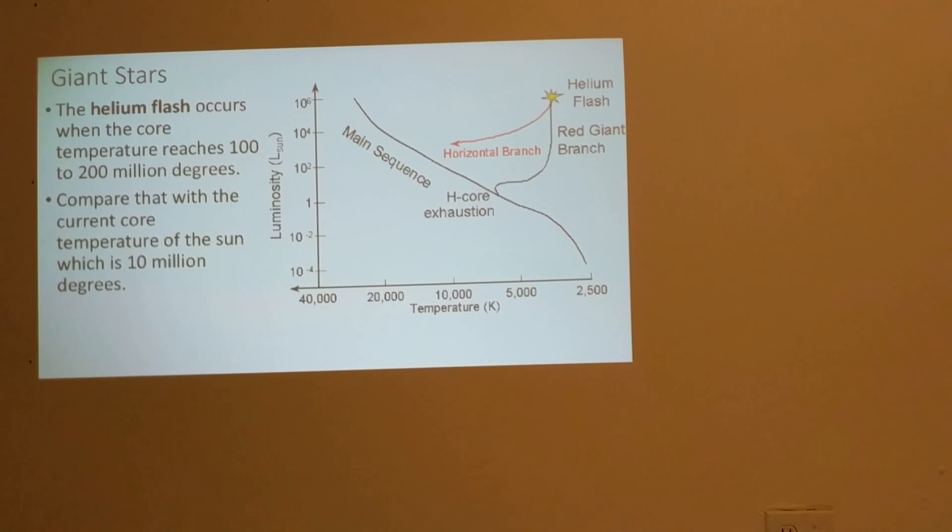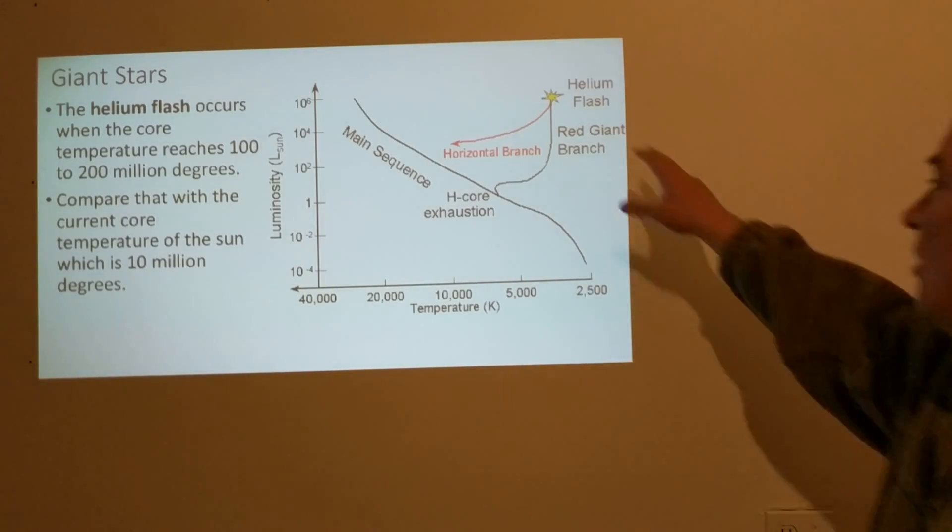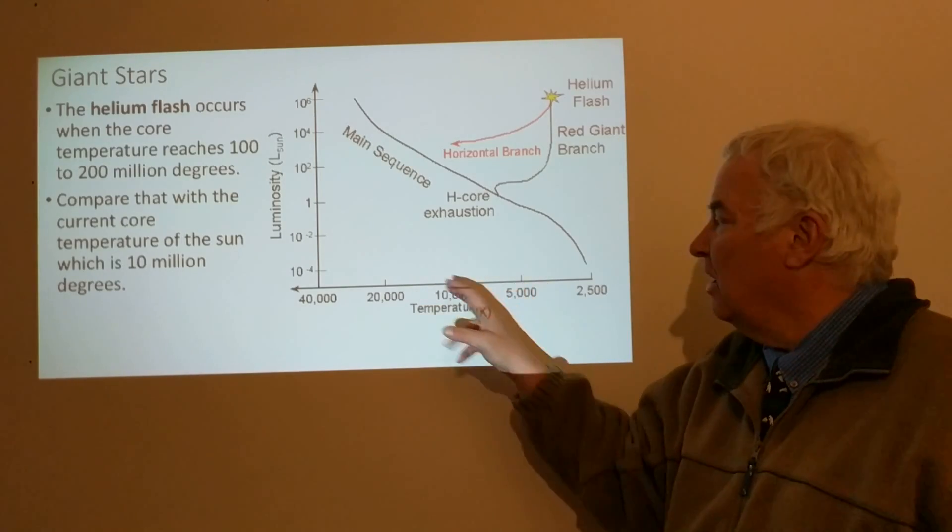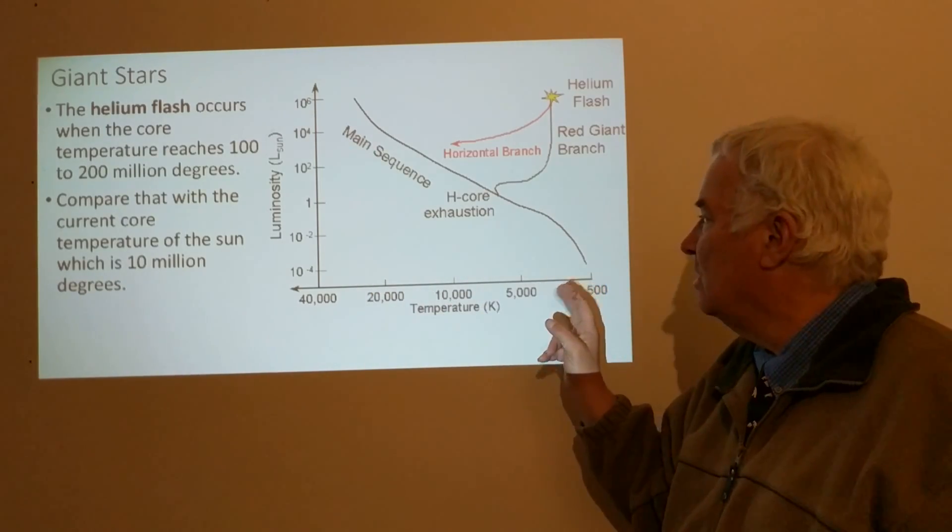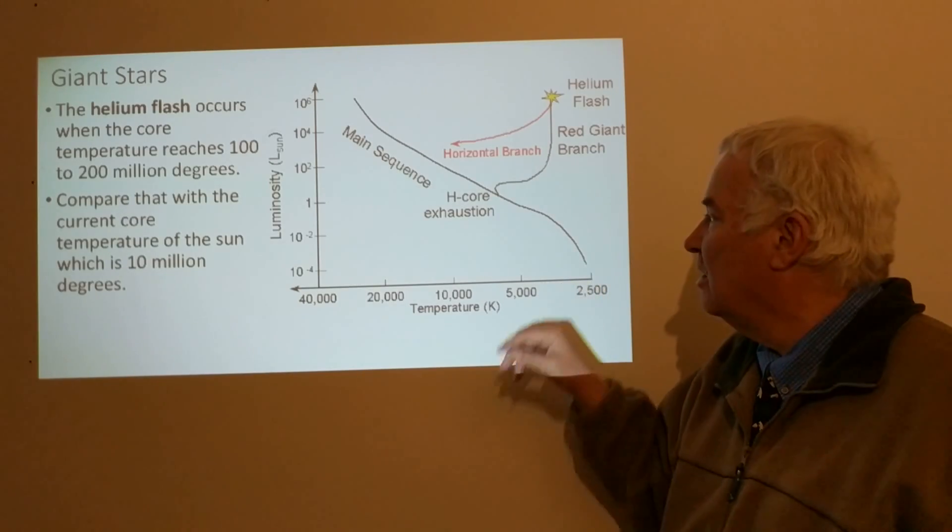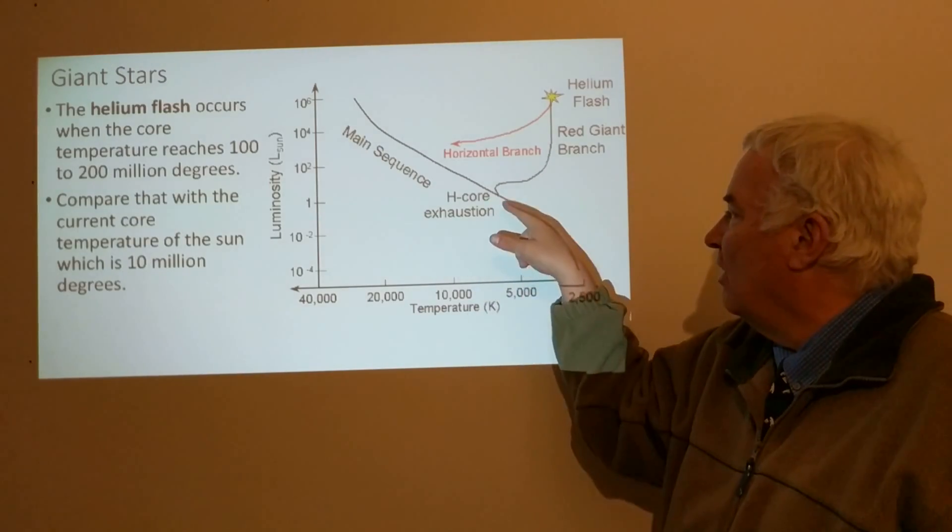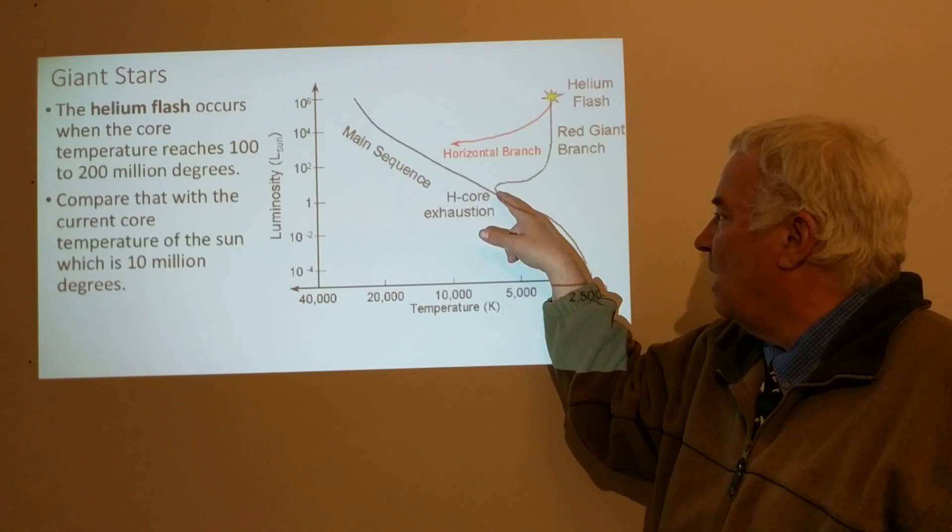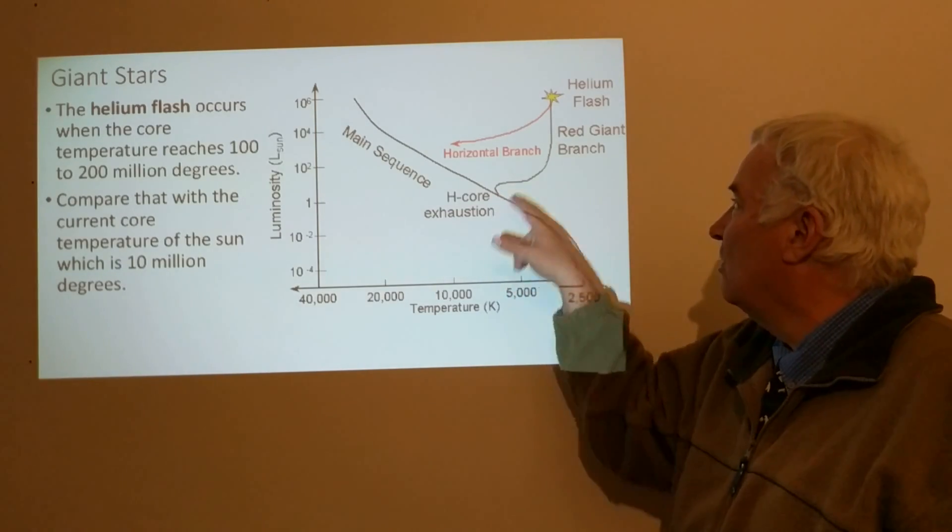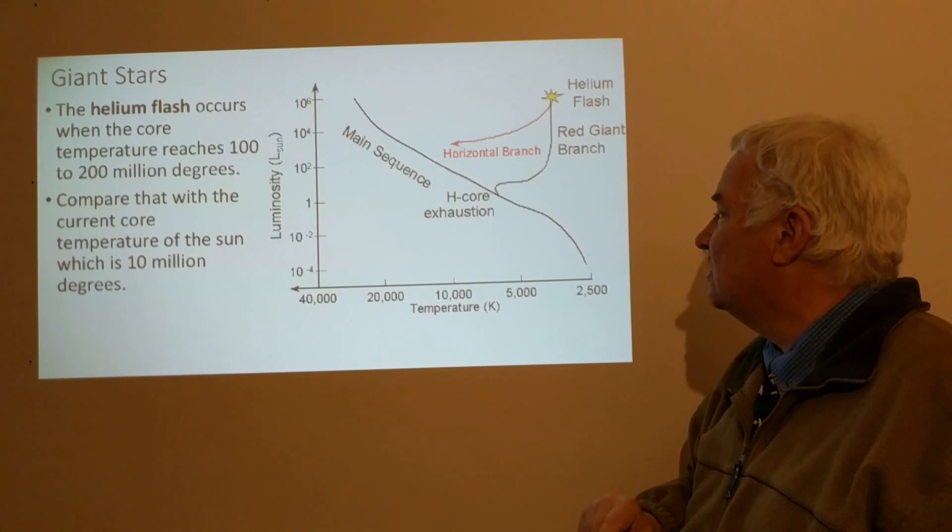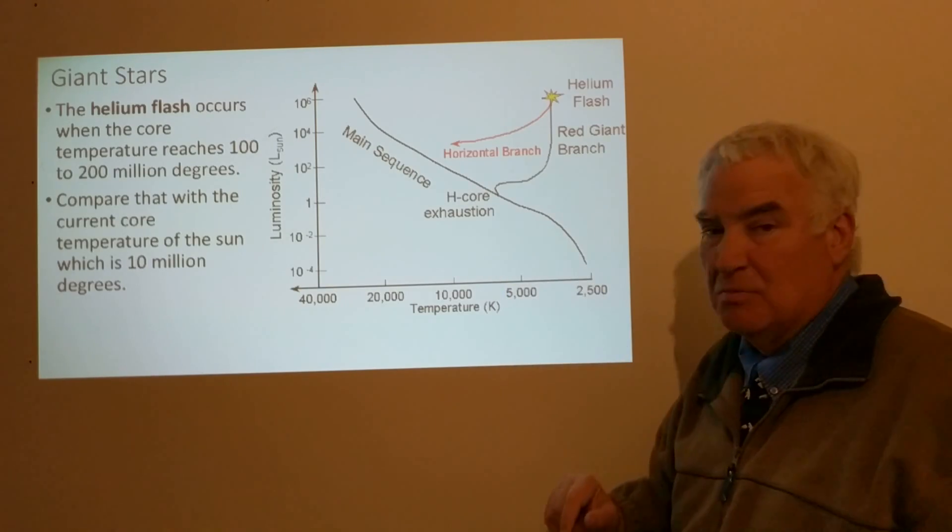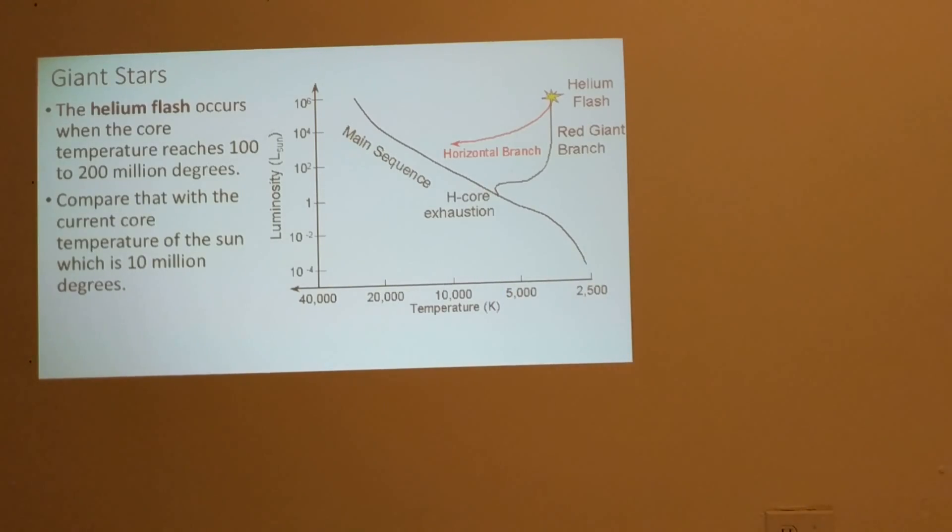When the helium flash occurs, the core temperature is about 100 to 200 million degrees. We can compare that to when the core temperature was 10 million degrees. Remember, on the HR diagram this is the surface temperature always; the core we can't see but we can tell from models. The core temperature is about 10 million degrees on the main sequence and about 100 to 200 million degrees during the helium flash. So even though the star is cooler on the surface, it's much hotter in the core.